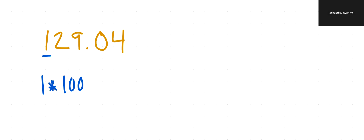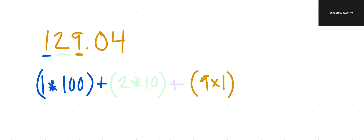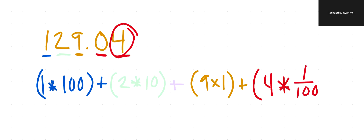So starting with the one — that's one times one-hundred, because it's in the hundreds place. Plus two times ten for the tens place. Plus nine times one for the ones place. Now going to decimal land — there's no digit in the tenths place, so we skip it. We just have four times one-hundredth, because four is in the hundredths place. That's the expanded form for 129 and four-hundredths.